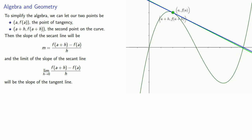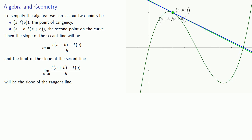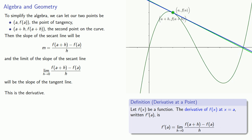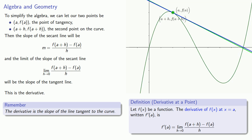We might ask where we've seen this limit before — and in fact this is the very limit that defines the derivative. This leads to an important connection between algebra and geometry: the derivative is an algebraic expression, a formula, while slope is a geometric idea. The key concept to remember is that the derivative is the slope of the line tangent to the curve. Among the things you should learn in a calculus course, this is central.